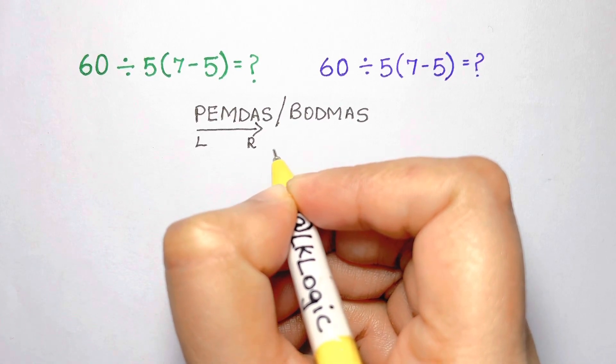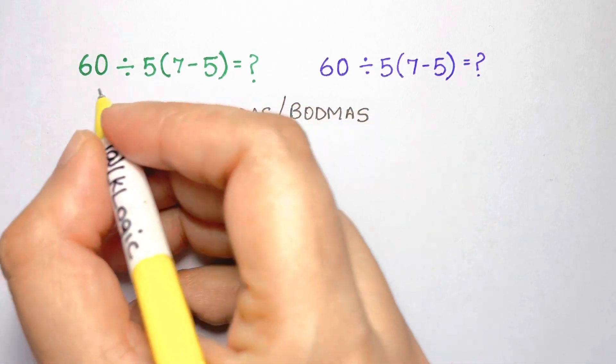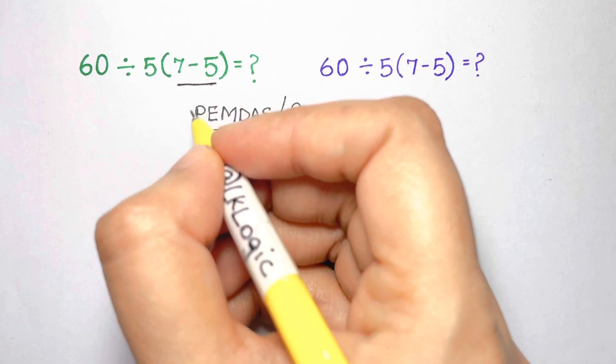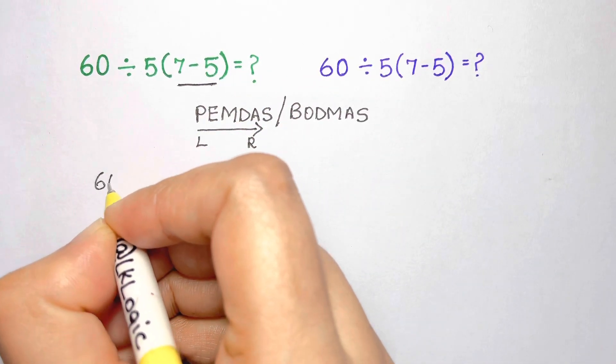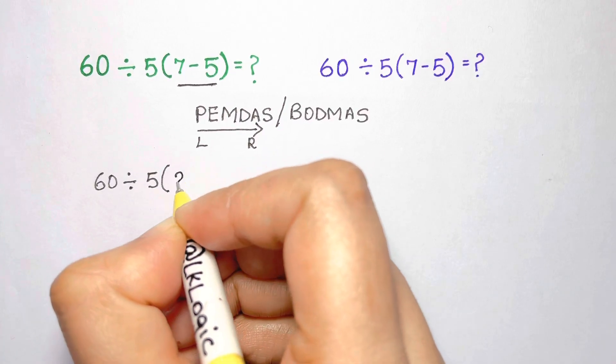The first step of the problem has no controversy. The expression contains a parenthetical expression which must be evaluated first. So 7 minus 5—this is the non-controversial part of the question—and this equals 2. The argument is about what to do next.